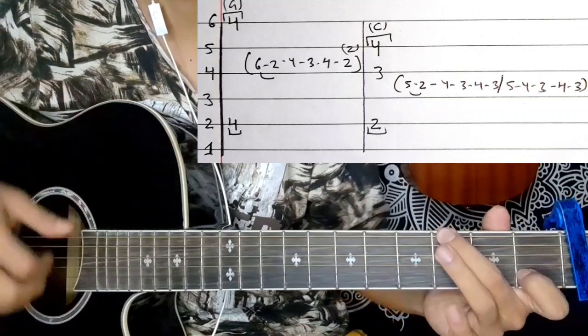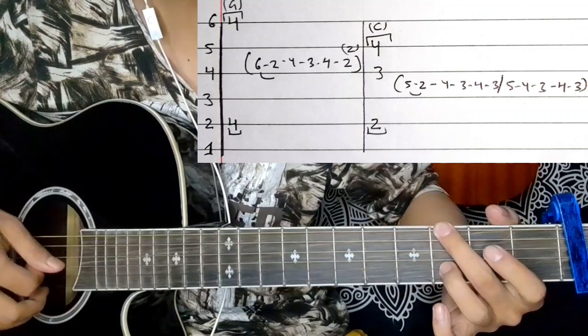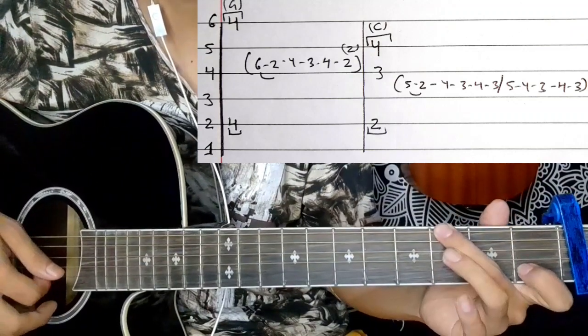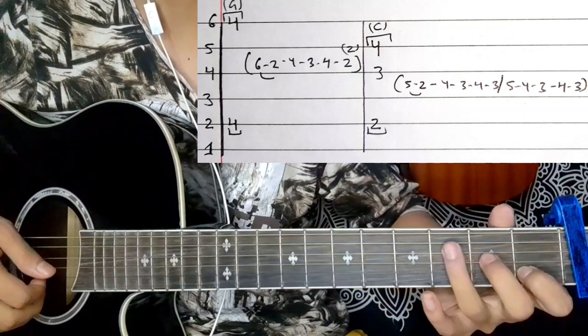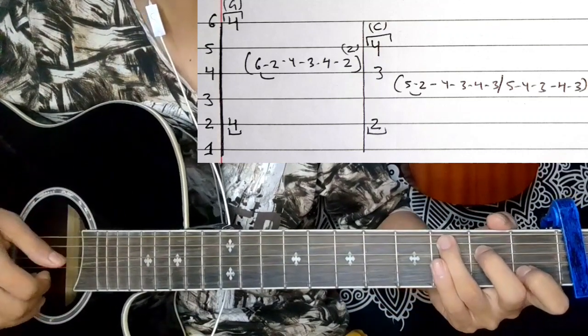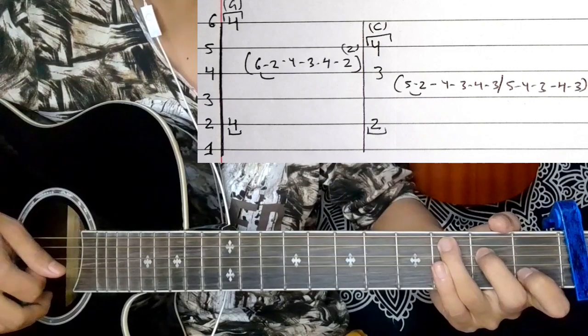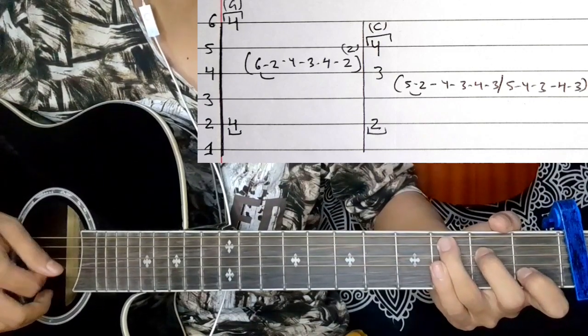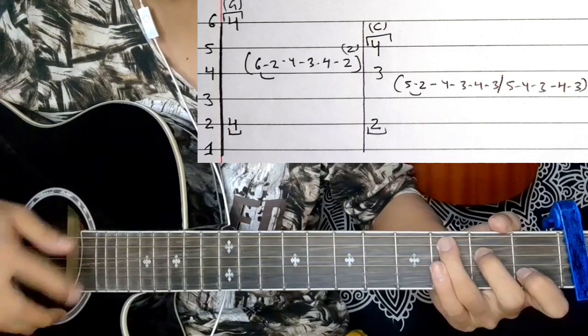Press on the six string, picking 4, 3, 4. The picking pattern continues: 4, 3, 4, 3, then 5, 4, 3, 4, 3. That's for the G chord.